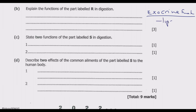Under the exocrine function, the pancreas releases pancreatic juice which contains digestive enzymes. There are three of them: lipase, which works with bile produced by the liver to break down fats in our diet; protease, which breaks down proteins in our diet into small digestible compounds that we can absorb or assimilate in the body; and amylase, which helps to break down starch into sugar that our body can use.